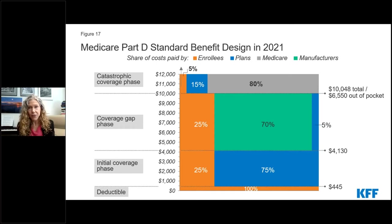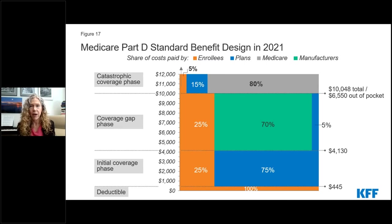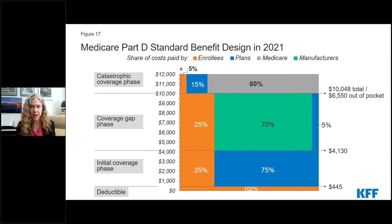Part D plans can modify some of these standard benefit parameters — for example, they can charge a lower or no deductible, and they can charge tiered co-payments or coinsurance amounts other than 25%. One thing to keep in mind is that these cost sharing requirements do not apply to Part D enrollees who receive low-income subsidies. For those individuals, cost sharing amounts are considerably lower. This cost sharing design is also unlike that in Medicare Part B, which covers physician-administered drugs — not drugs you purchase at a retail pharmacy. For Part B drugs, Medicare charges a flat 20% coinsurance, although many beneficiaries have supplemental coverage like Medigap or retiree benefits to help pay their cost sharing liability.